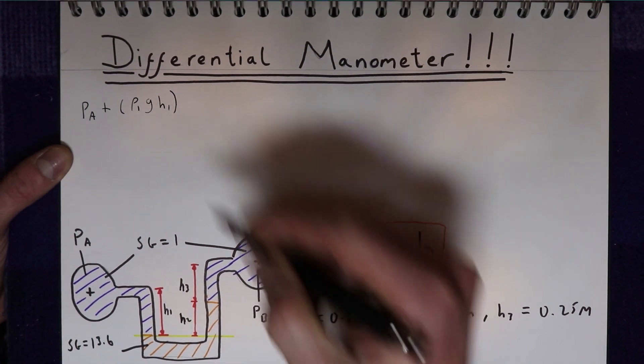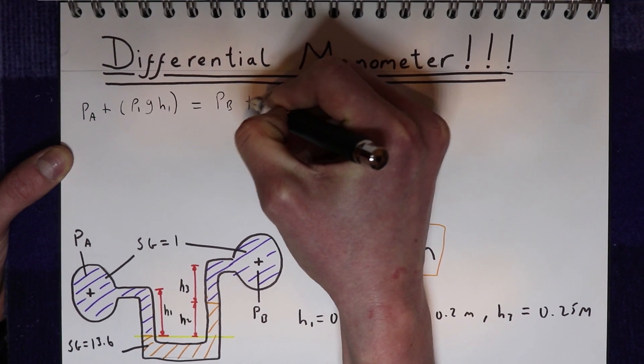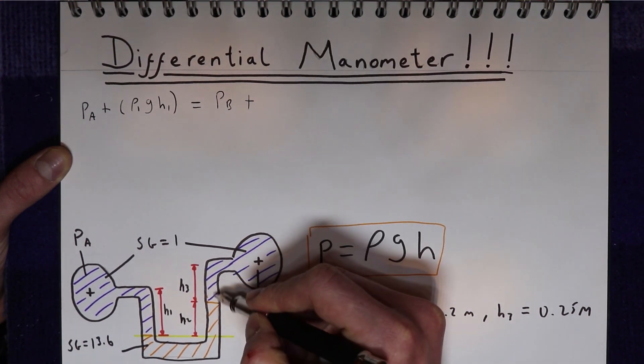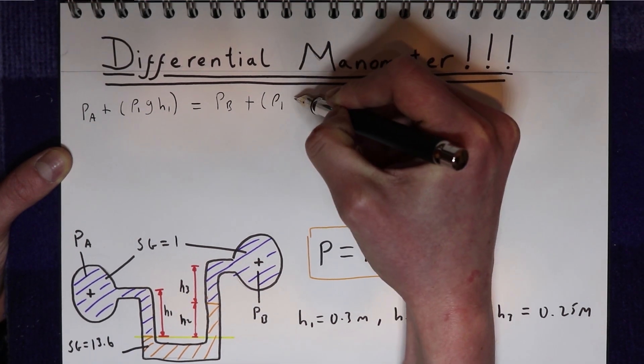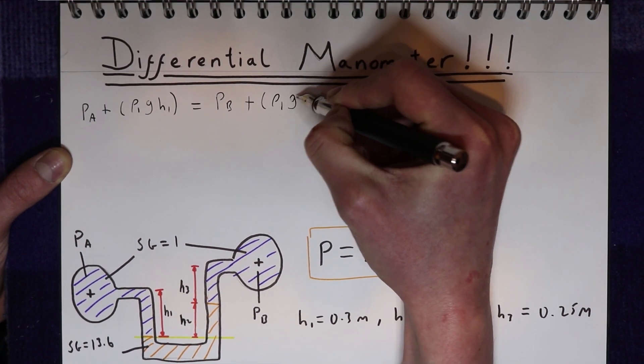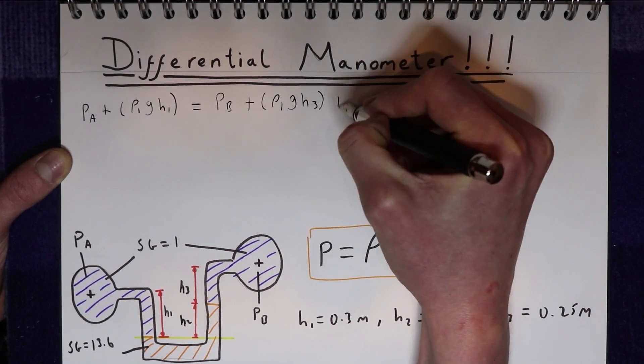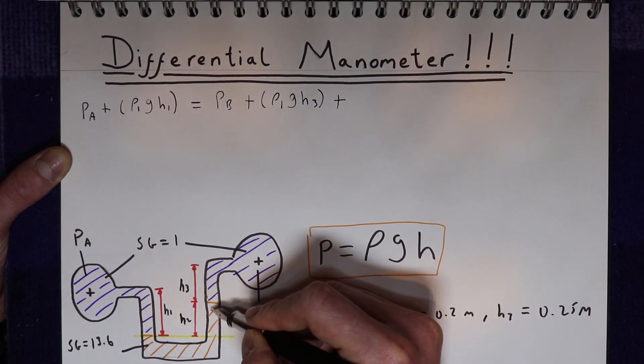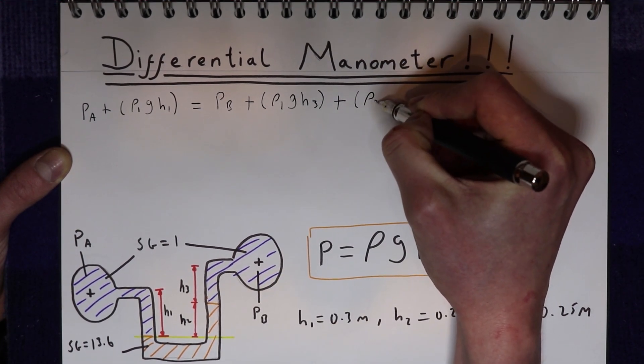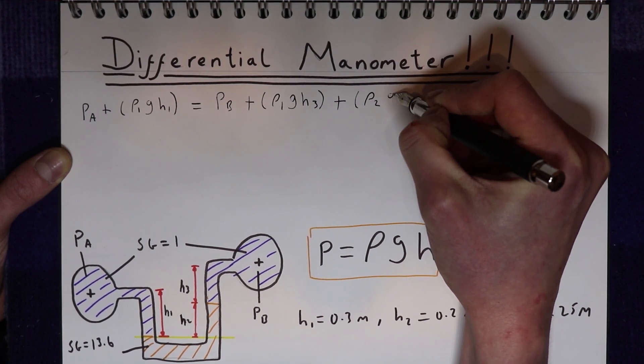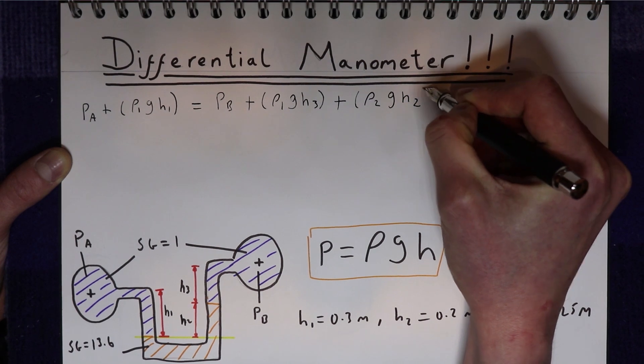On this side of the line we have pressure Pb plus the pressure due to this column of water here. So we'll say density 1 times gravity times H3, add it to the pressure from this column of mercury here. So we'll say mercury has a density of density 2 times gravity times H2.